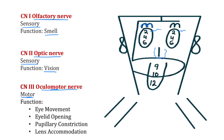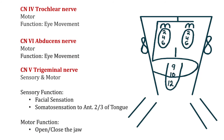Cranial nerve 3, the oculomotor nerve, is a purely motor cranial nerve responsible for eye movements, eyelid opening, pupillary constriction, and lens accommodation. Note that cranial nerve 4, the trochlear nerve, and cranial nerve 6, the abducens nerve, are also purely motor nerves responsible for eye movement — so CN3, CN4, and CN6 together are all responsible for eye movements.